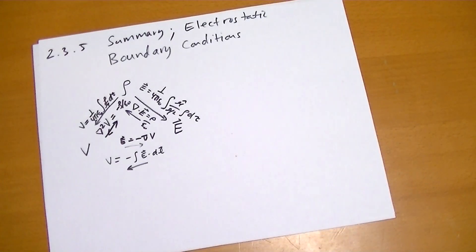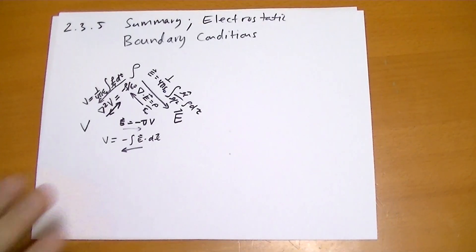Okay, so we have these six key equations to find anything: the electrostatic field, the potential, the charge density. Knowing these six equations, everything becomes trivial.